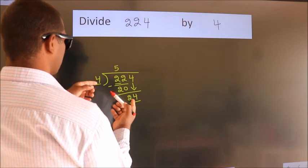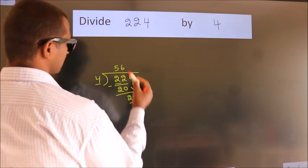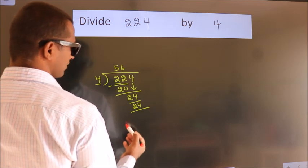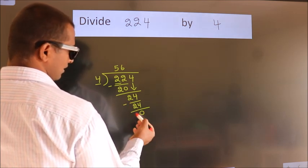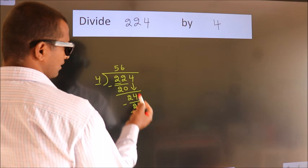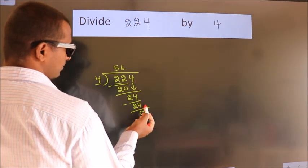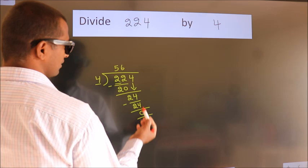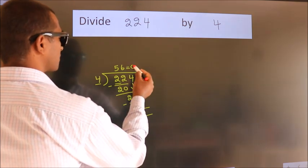4 times 6 equals 24. Now we subtract. We get 0. After this, no more numbers to bring down, and we got remainder 0. So, this is our quotient.